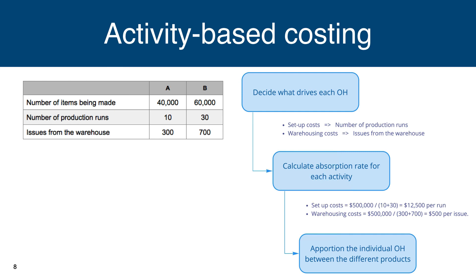We then work out a mini overhead absorption rate for the activity that drives those costs. For setup costs, total overhead of $500,000 divided by total production runs (10 + 30 = 40) gives $500,000 ÷ 40 = $12,500 per production run. For warehousing costs, $500,000 divided by total warehouse issues (300 + 700 = 1,000) gives $500,000 ÷ 1,000 = $500 per issue.